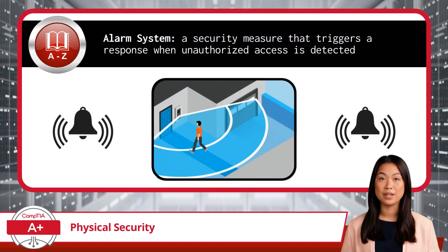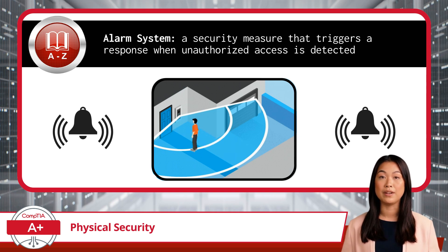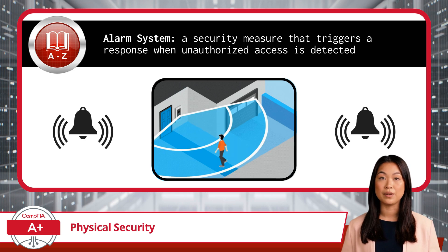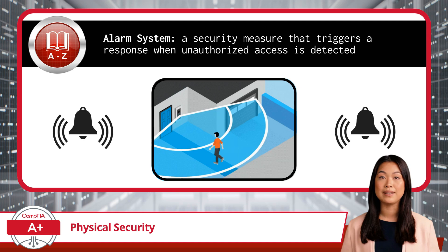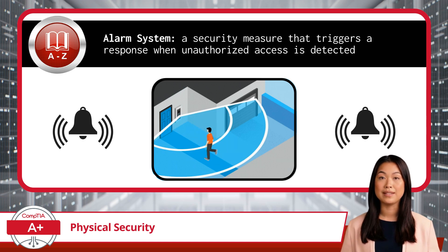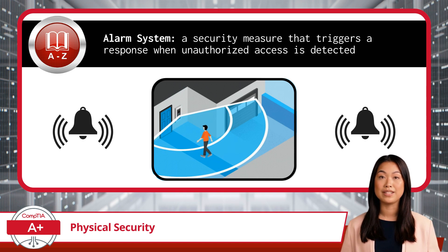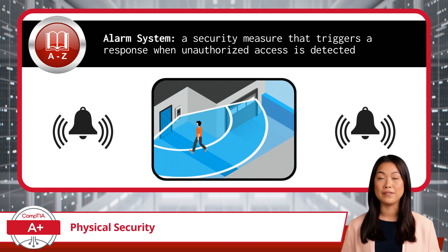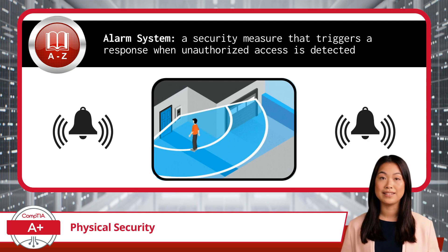Alarm systems are a security measure that triggers a response when unauthorized access is detected. Whether someone forces a door open or breaks a window, alarms can notify security personnel or even law enforcement in an instant. Paired with motion sensors, which detect movement in areas that should be secure, you have a robust system for detecting and responding to threats.